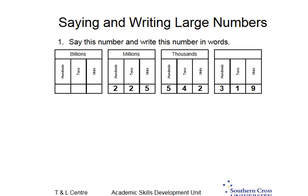So we want to know how to say this number and write it in words. Because of the diagram that we've got here, saying it is really easy. So we can say this here as 225,542,319.